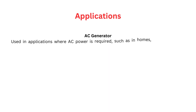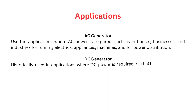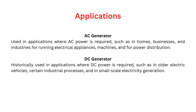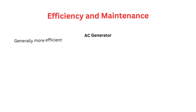Applications of AC and DC generators. AC generator: used in applications where AC power is required, such as in homes, businesses, and industries for running electrical appliances, machines, and for power distribution. DC generator: historically used in applications where DC power is required, such as in older electric vehicles, certain industrial processes, and in small-scale electricity generation.